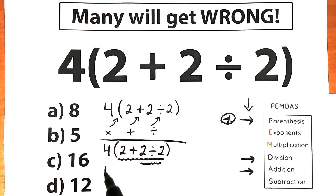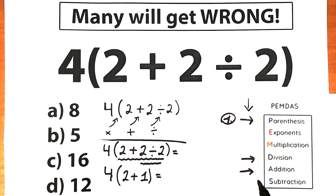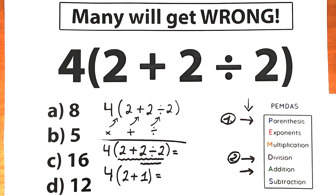So we should divide 2 divided by 2 first. We have 4 and inside the parenthesis we have 2 plus — and the first step inside is division: 2 divided by 2, which equals 1. We complete this division step. The third step is addition, because we need to add all the things inside the parenthesis.